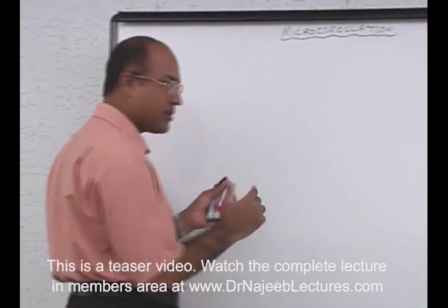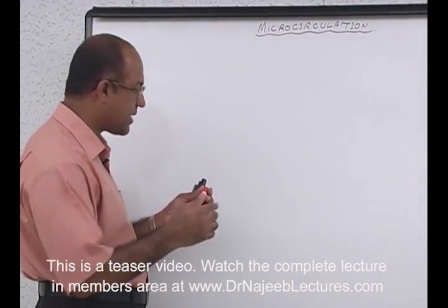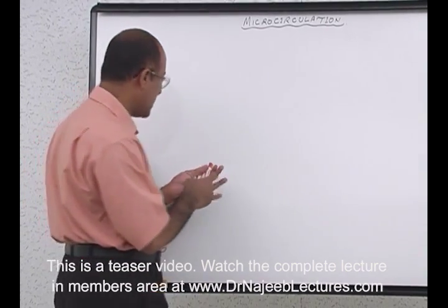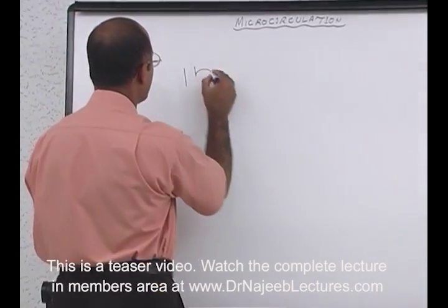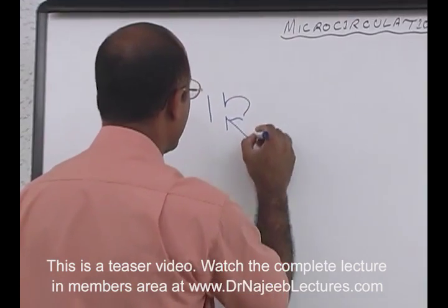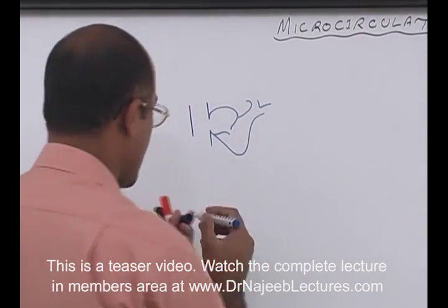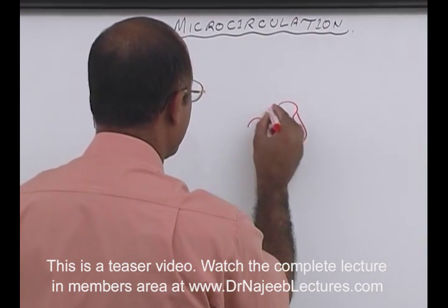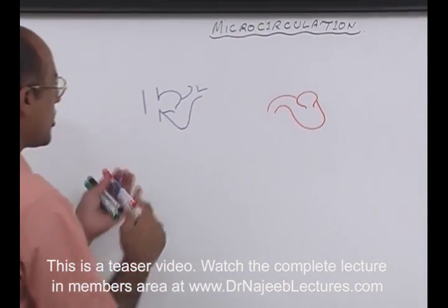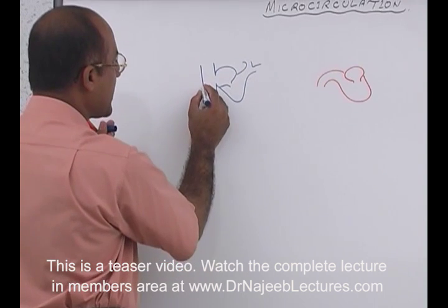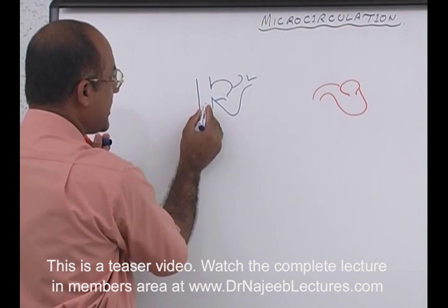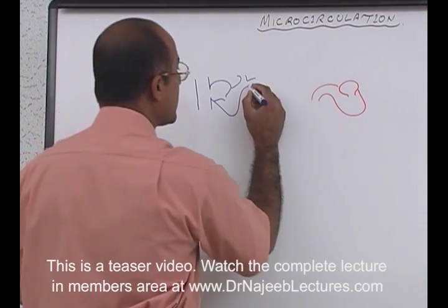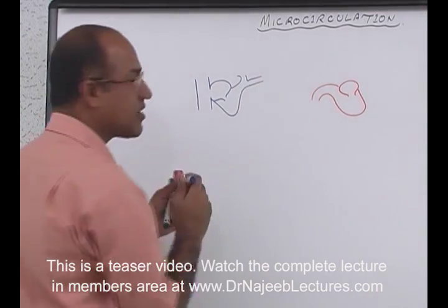To put microcirculation into proper perspective, we should draw the right heart and left heart both. The right heart collects blood from all the body. All the venous blood coming back through the superior vena cava and inferior vena cava goes to the right atrium, then to the right ventricle, and is eventually pumped into pulmonary circulation.